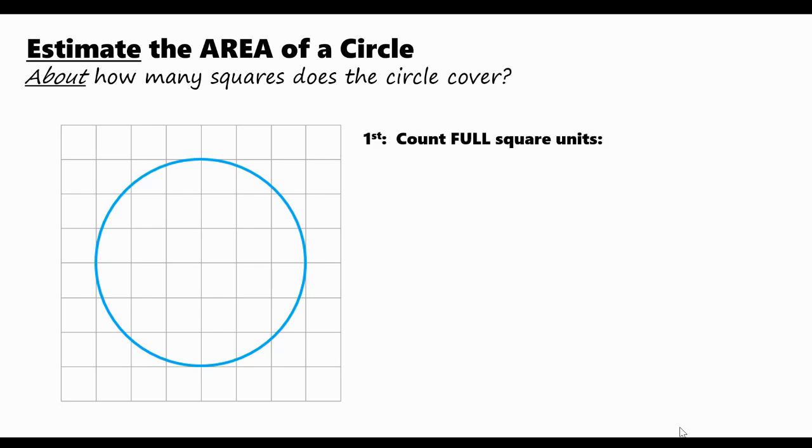We'll start by counting full square units. Take a look. This portion of the circle is covered by four rows with four square units in each for a total of 16 square units.